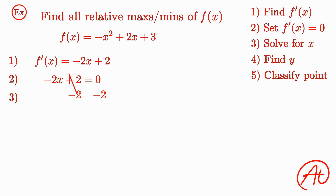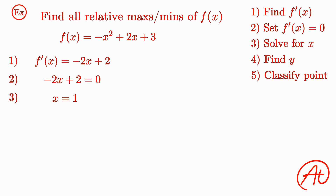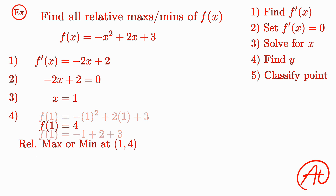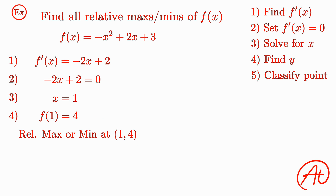Let's first subtract 2 from both sides, then divide by negative 2 to get that x is equal to 1. This is the x-coordinate, but what is its corresponding y-coordinate? To find this, we plug this x-value into our original f function, because f(x) gives us y-values. Plugging in 1 and doing the math, we get that f(1) is equal to 4. So there is either a max or a min at (1, 4), but how do we classify which one it is?